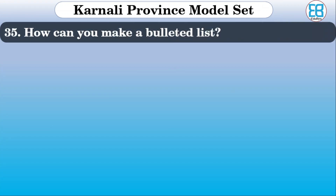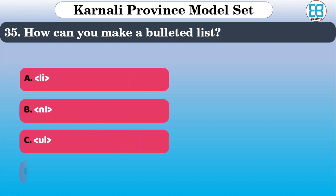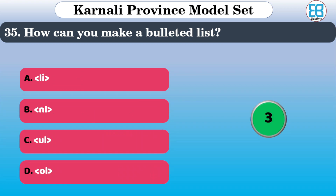How can you make a bulleted list? The correct option is option C.